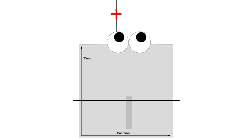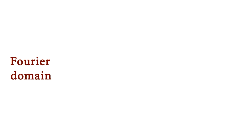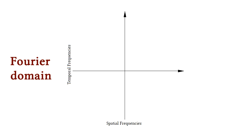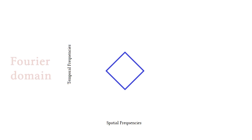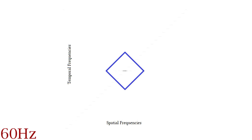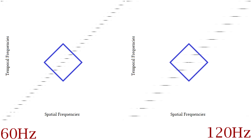Let's consider the same example in the Fourier domain. The x-axis represents spatial frequency and the y-axis represents temporal frequencies. The diamond shape on this plot indicates the range of frequencies visible to the eye. The animation at 60Hz forms a short line — it lacks high spatial frequencies, it's blurry. The Fourier domain also reveals multiple aliases, which cause the motion to look juddery. At 120Hz, the lines become wider as the animation gets sharper, and the aliases are put further apart, making them less visible.